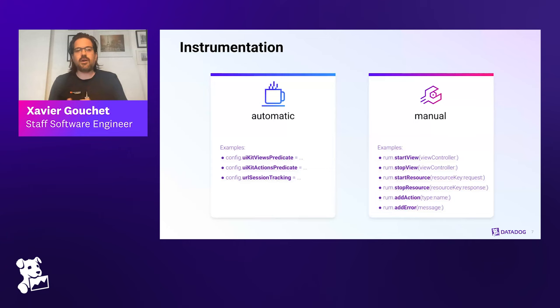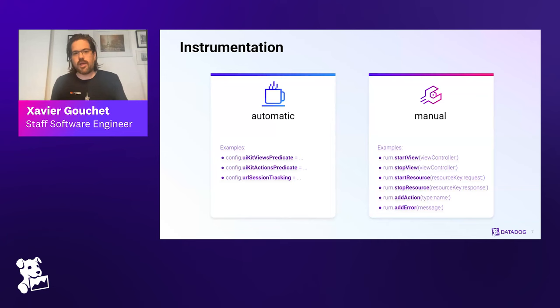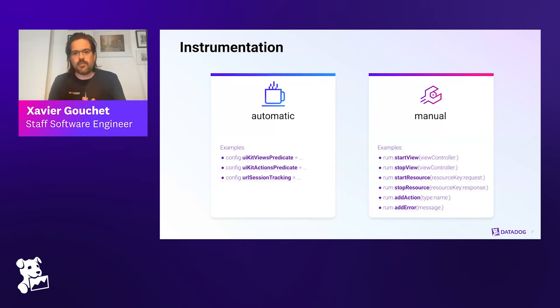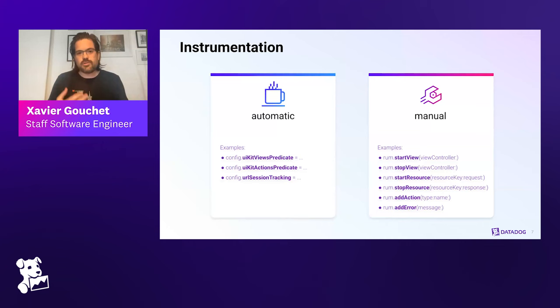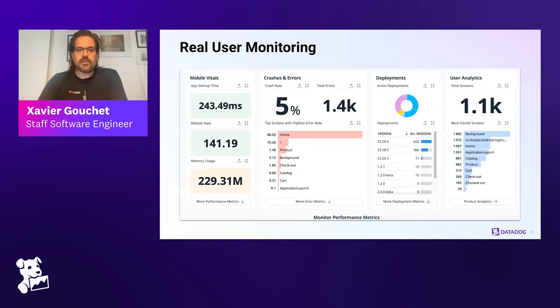This is where Datadog comes in. When using our SDKs, you can have two types of instrumentation. Usually you'll use the automatic way — you say what you want to track and Datadog does everything in the background. But you can also have fully manual tracking where you explicitly say which event to track with which attributes at a specific time. Of course, there's also a mix where you start with automatic and then add custom attributes or custom events for finer control.